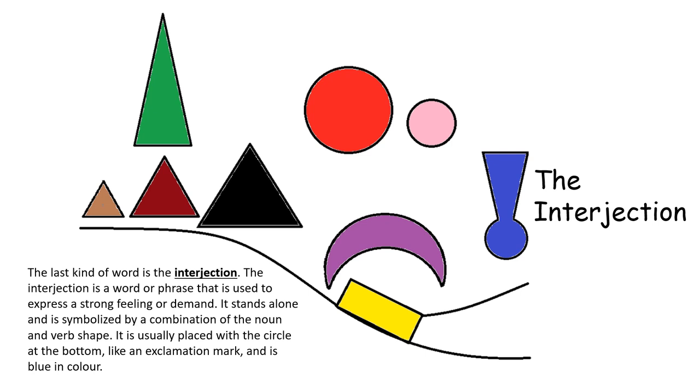The last kind of word is the interjection. The interjection is a word or phrase that is used to express a strong feeling or demand. It stands alone and is symbolized by a combination of the noun and verb shape. It is usually placed with a circle at the bottom, like an exclamation mark, and is blue in color.